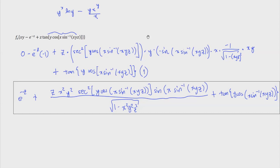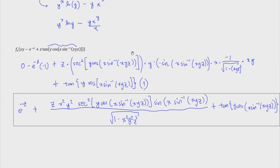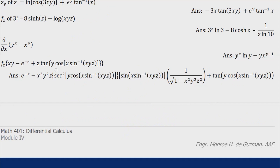To stay on track, label each term in the expression — mark which ones are constants while you differentiate. Once you get the hang of it, it becomes much easier. Partial differentiation is actually easier than total differentiation, because in partial differentiation you treat most variables as constants, whereas in total differentiation all variables are treated as changing with time. That's the introduction to partial differentiation.